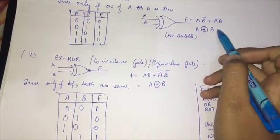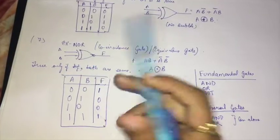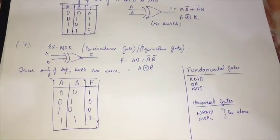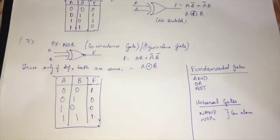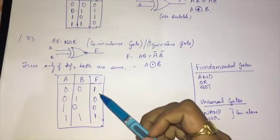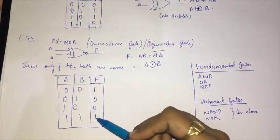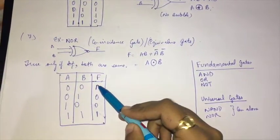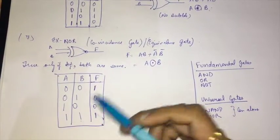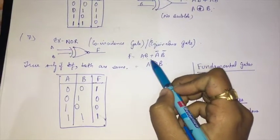The last is the XNOR gate, also called the coincidence gate or equivalence gate. When both A and B are the same, only then will the XNOR gate give an output of 1—both must be compulsorily the same, either 0,0 or 1,1. The logical expression is AB + ĀB̄, and this is the symbol.